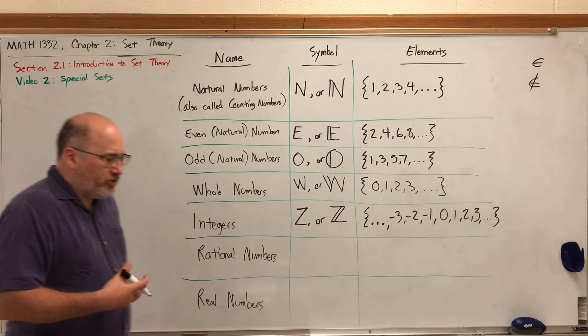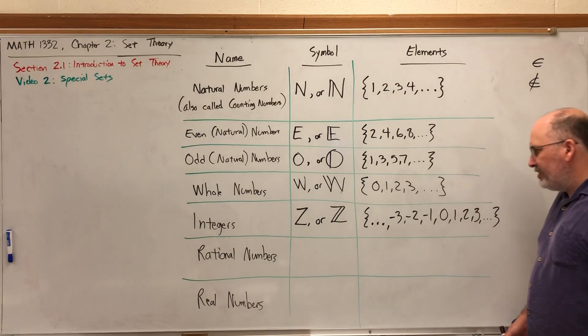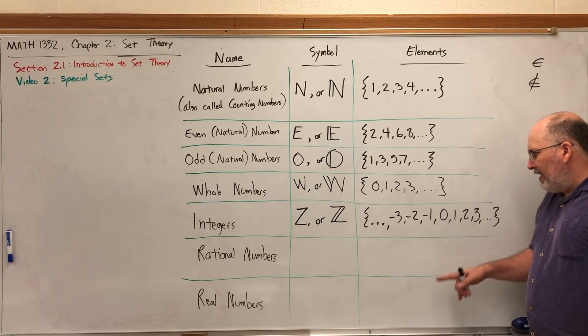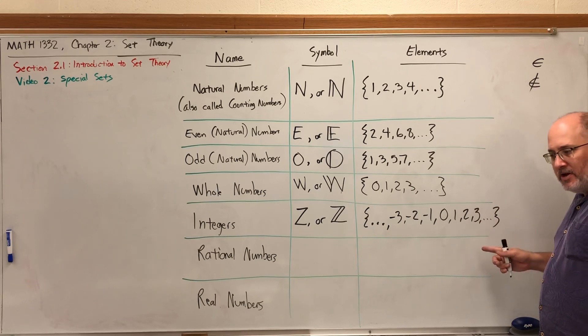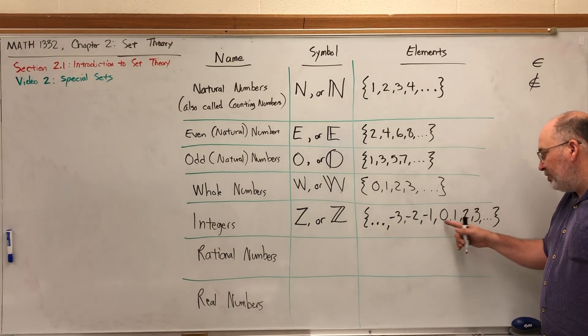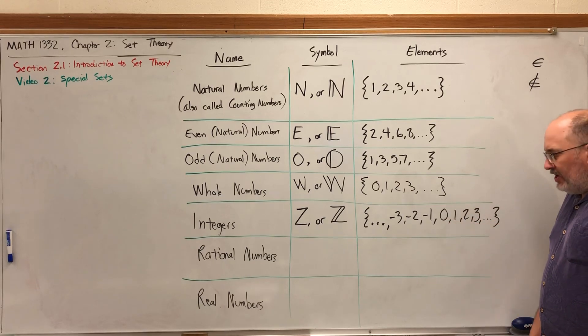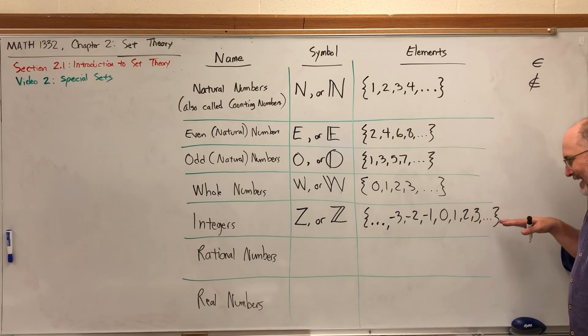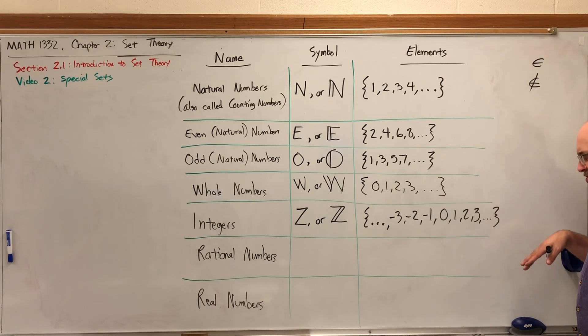For the rational numbers, the premise is to take the previous set of numbers and add some more that are missing. For example, my integers go from negative three to negative two to negative one to zero to one to two to three. But there's a lot of numbers missing between any two integers, like between zero and one, there are a lot of decimals and fractions.